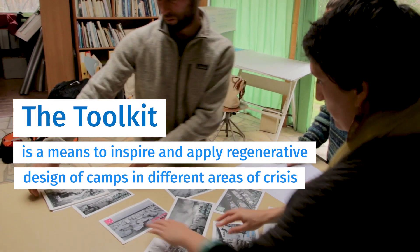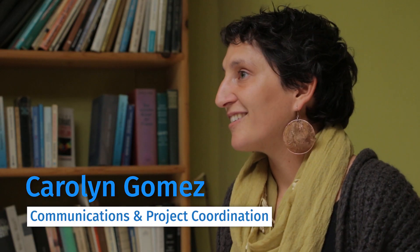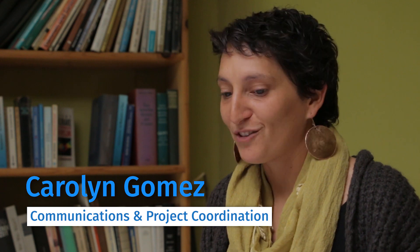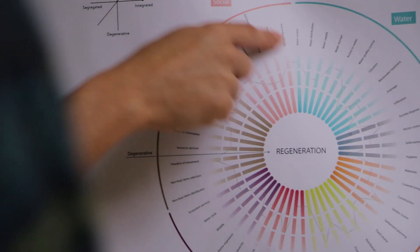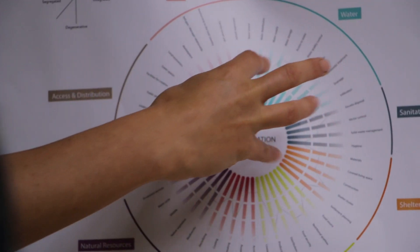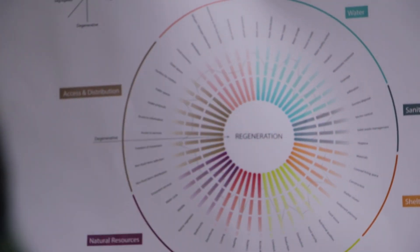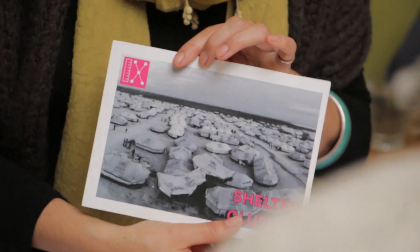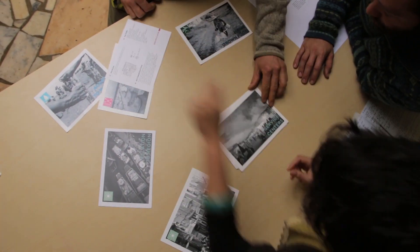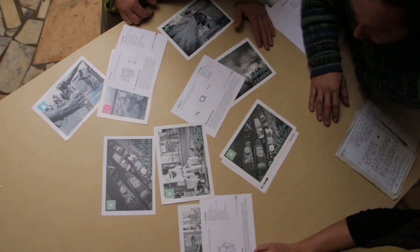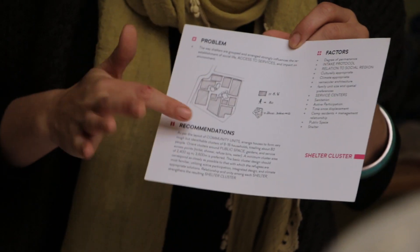Every design process needs to take into account the uniqueness of what we're designing for. What climate are we in? What culture are we accommodating? What region are we connecting to? To maintain this adaptability, we designed a toolkit with different components that allow us to keep track of these elements every time we make a design decision.